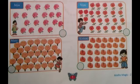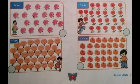Jaya counted 19 flowers. Write the number 19 in the given circle.